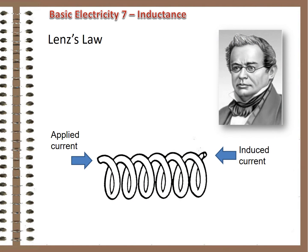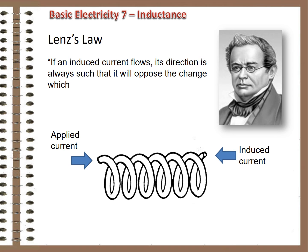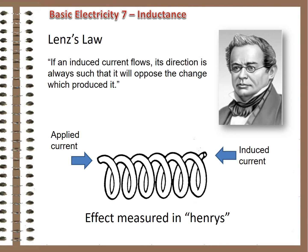It turns out, because of the timing, the current that flows because of the induced voltage opposes the source current. Heinrich Lenz said it all in 1834: if an induced current flows, its direction is always such that it will oppose the change which produced it. In electronic circuits, the amount of opposing force is measured in Henrys, after an American scientist who was one of the discoverers of magnetic induction. The strength of the force varies with the number of coil turns, the material the coil is wrapped around, the frequency of polarity change, and other factors.